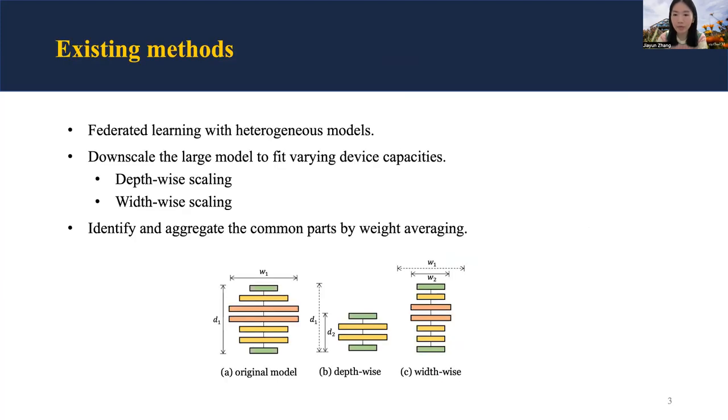Existing methods enable clients to train different models according to device capacity by downscaling the large models for weak devices. Then they identify shared parts and perform model aggregation by weight averaging.